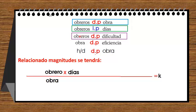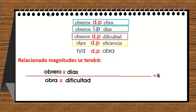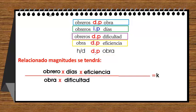Cuando tenemos obreros directamente proporcional con dificultad, vas a dividir obreros entre dificultad — obrero va arriba, dificultad va abajo, y dificultad multiplica obra. Cuando obra es directamente proporcional a eficiencia, eficiencia va a dividir a obra, es decir, obra divide entre eficiencia; como obra está abajo, eficiencia tiene que ir arriba.